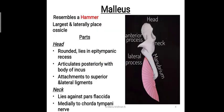The malleus bone is composed of five parts. The first is the head of the malleus — the upper part — which is rounded and lies in the epitympanic recess. The middle ear cavity is divided into three parts: the epitympanum, the mesotympanum, and the hypotympanum. The rounded head lies in the epitympanic recess and articulates posteriorly with the body of the incus. The superior and lateral ligaments also attach to the head of the malleus.